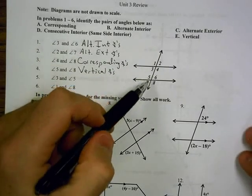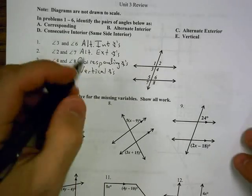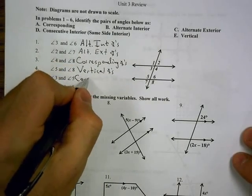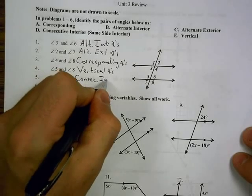Number 5, we have angle 3 and 5, those are on the same side of the transversal, in between the lines, so we call those consecutive interior angles.